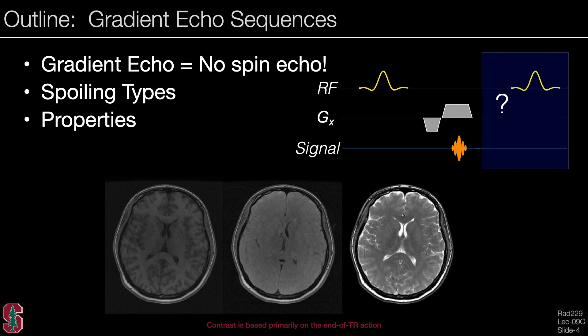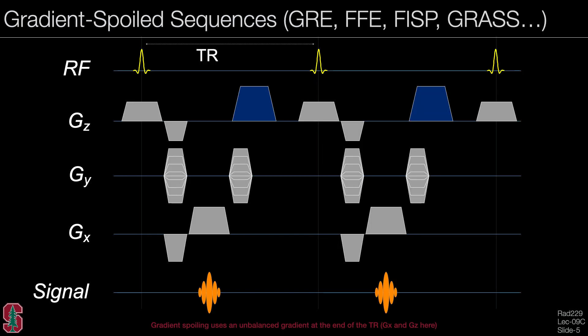Continuing from prior lectures, gradient echo sequences are usually short TR. There is no spin echo in a gradient echo sequence, and there are different types of spoiling. Here is an example of a gradient spoiled sequence. Notice that the gradients are no longer balanced over the TR — you see the large blue gradient, which is a gradient spoiler. The readout gradient is not rewound, which adds additional spoiling on that axis.